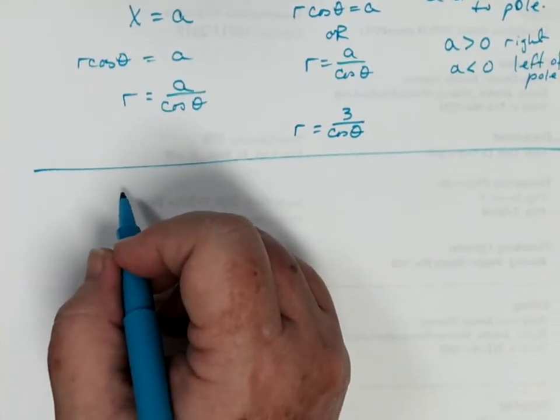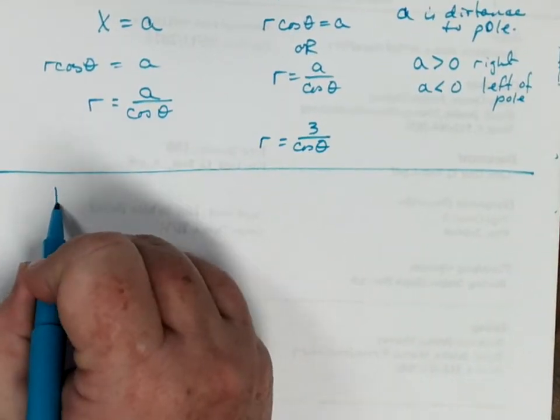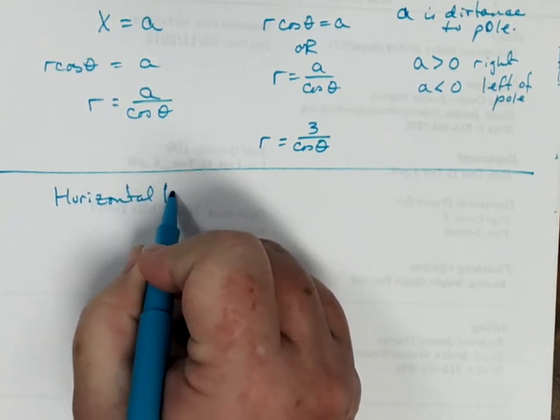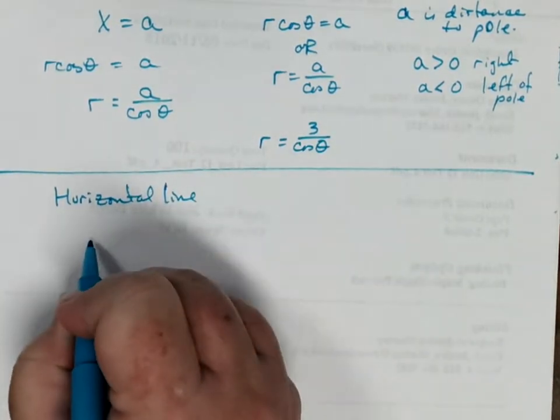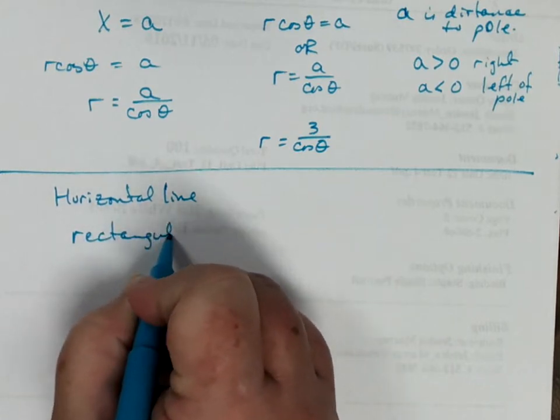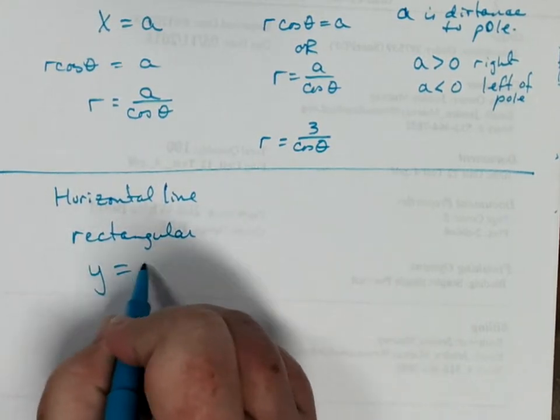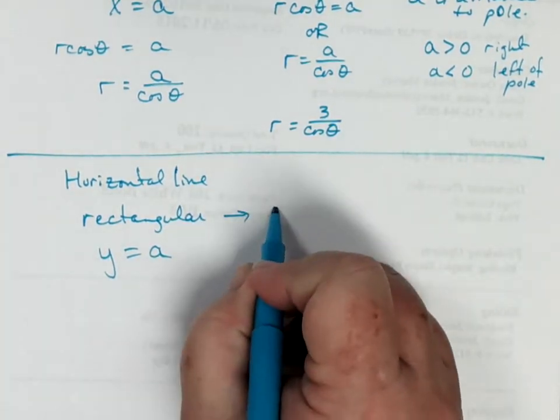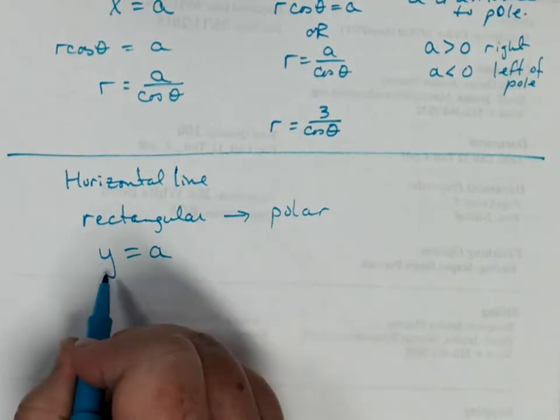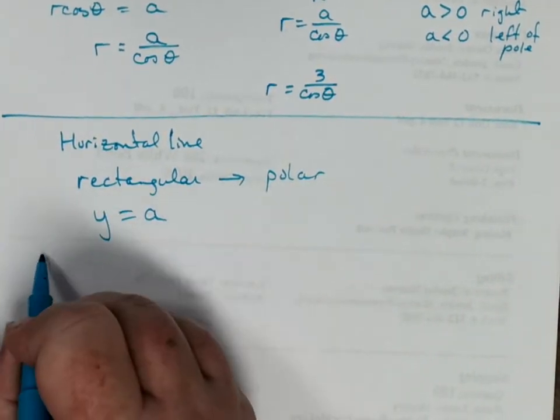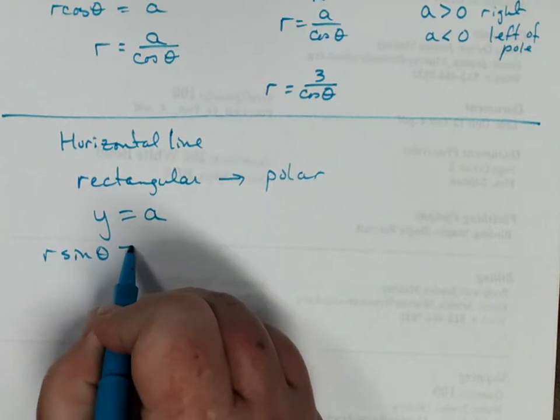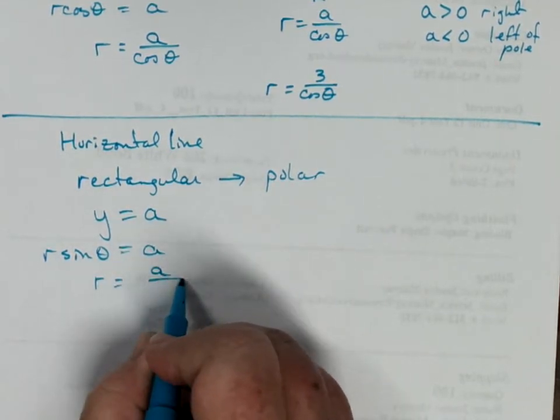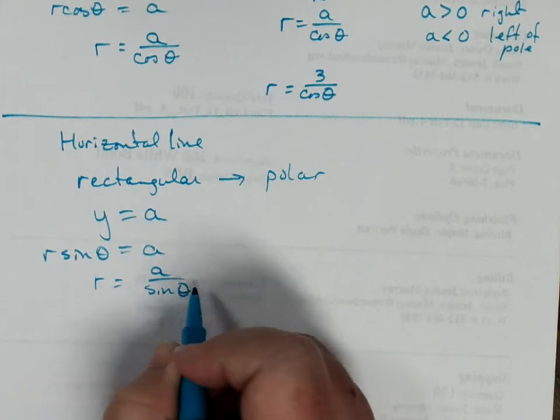A horizontal line in rectangular form would be y equals a. And if I wanted to convert that to polar, then I would remember that y equals r sine of theta equals a. And if I wanted r by itself, that would be a divided by sine of theta.